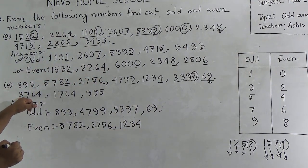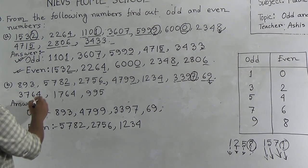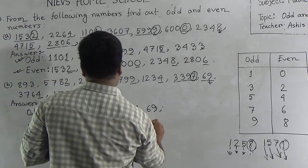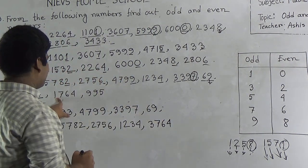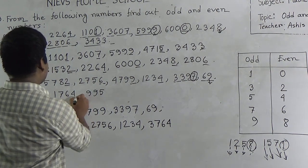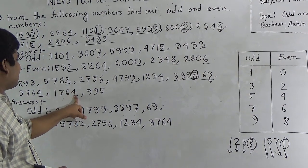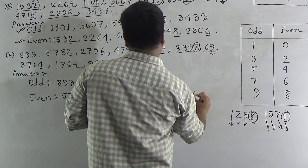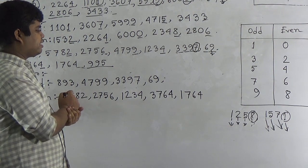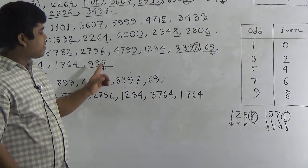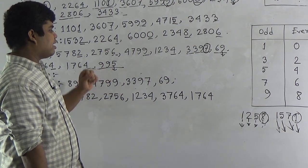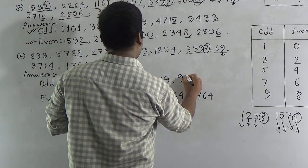Our next number is three thousand seven hundred sixty-four. The ones place digit is four, which is even. So three thousand seven hundred sixty-four is even, and we write it in the even number section. Our next number is one thousand seven hundred sixty-four. The ones place digit is four, which is even. So one thousand seven hundred sixty-four is even. Our last number is nine hundred ninety-five. The ones place digit is five, which is odd. So nine hundred ninety-five is odd, and it is written in the odd number section.